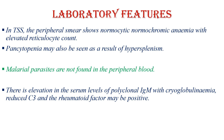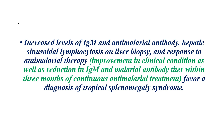The peripheral blood smear shows normocytic normochromic anemia with elevated reticulocyte count. Pancytopenia may also be seen as a result of hypersplenism. Malarial parasites are not found in the peripheral blood since there is no active infection. There is elevation in serum levels of polyclonal IgM with cryoglobulinemia. Reduced complement and positive rheumatoid factor may also be present. Hepatic sinusoidal lymphocytosis on liver biopsy and response to anti-malarial therapy favor a diagnosis of Tropical Splenomegaly Syndrome.